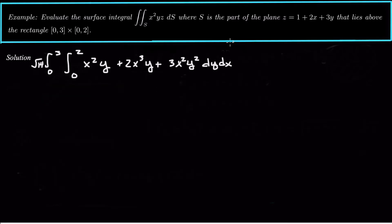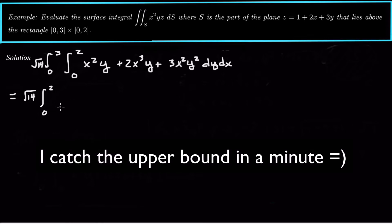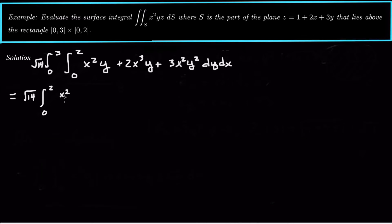If we distribute x squared times y into the parentheses and pull the square root of 14 out of the integral, we then integrate first with respect to y. It's going to be square root of 14 times the integral from 0 to 2. Integrating y, we get x squared over 2 times y squared, plus x cubed times y squared, plus x squared times y cubed.